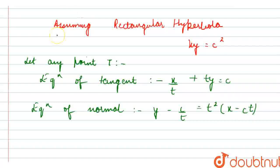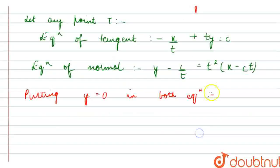Now, what I will do is that I will put y equal to 0 in both equations. So, putting y equal to 0 in both equations at a1, b1. The equation of tangent would be a1 equal to 2ct.